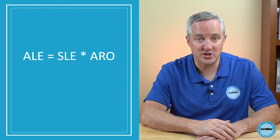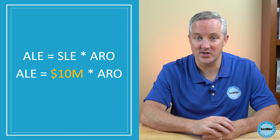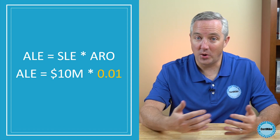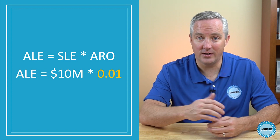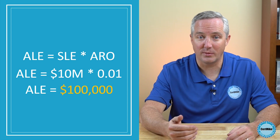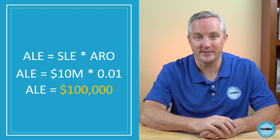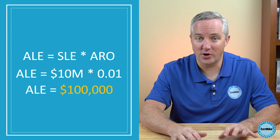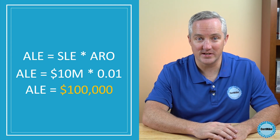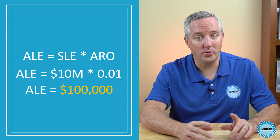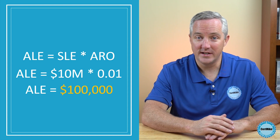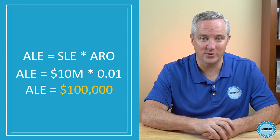In the case of flood risk to our data center, the SLE was $10 million and the ARO was 0.01. Multiplying these together, we get an ALE of $100,000. We expect to lose $100,000 each year from the risk of flooding to our data center. It's important to remember that the cost won't occur every year. In reality, we'll have $10 million in damage each time a flood occurs, but we only expect that flood to happen once every 100 years, so the cost averages out to $100,000 per year.